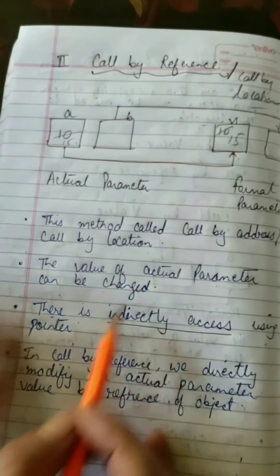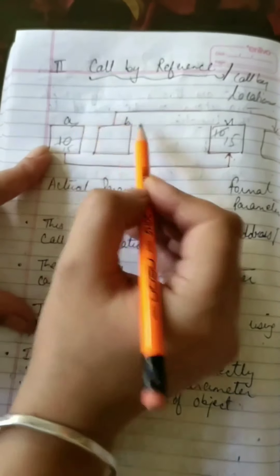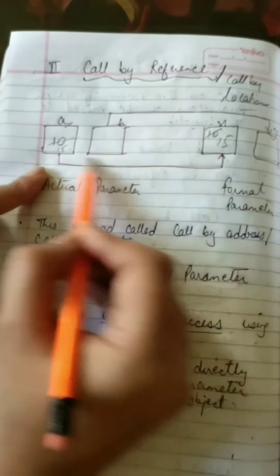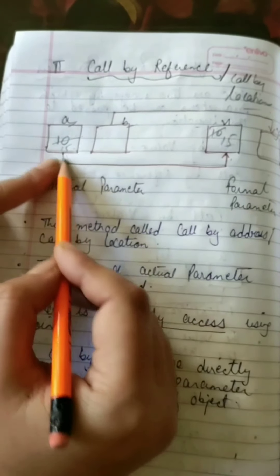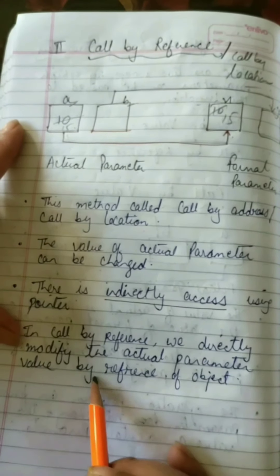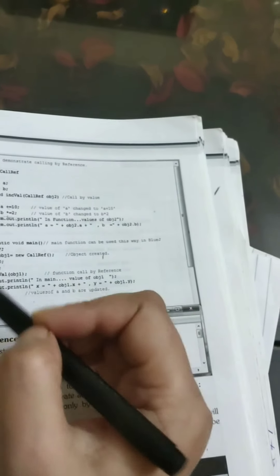In call by reference there is indirect access using pointers, whereas in call by value there is direct access. With the help of these pointers, the value of the formal parameter is modified first, and then the actual parameter is updated. In call by reference we directly modify the actual parameter value by the reference of an object. When we call the object and change the value, the formal parameter value is also changed automatically.